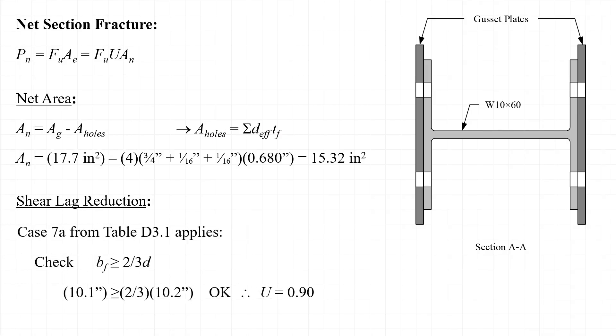Checking b sub f, which equals 10.1 inches, against two-thirds times d, where d equals 10.2 inches, we see that the first inequality is satisfied, and thus we could take U equal to 0.90.